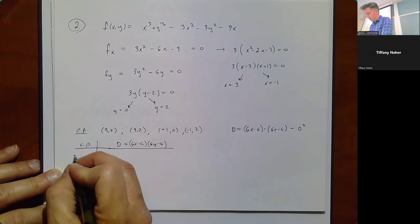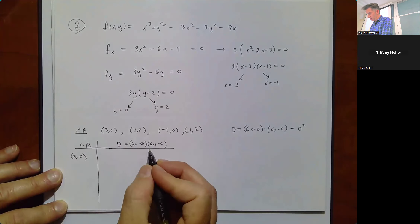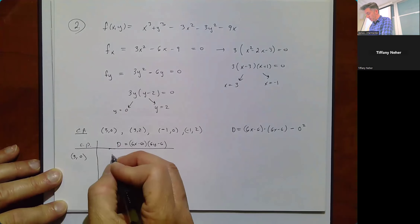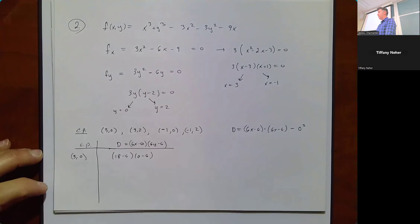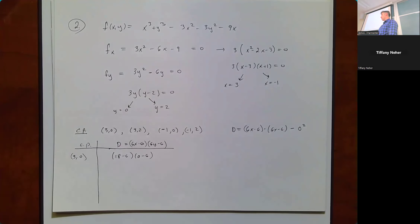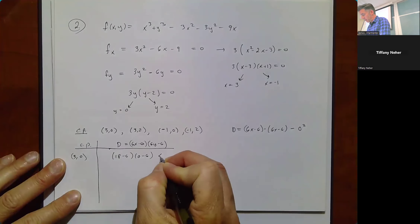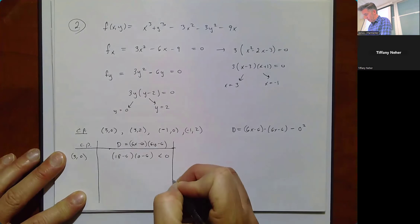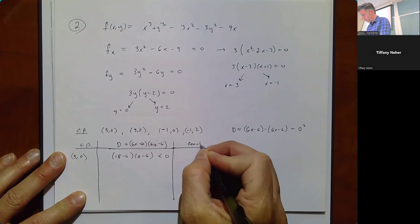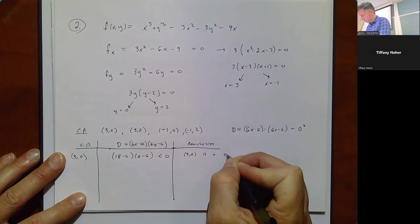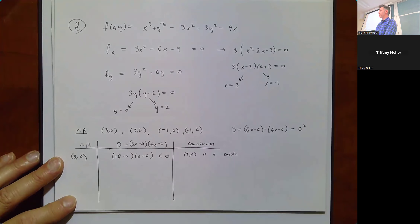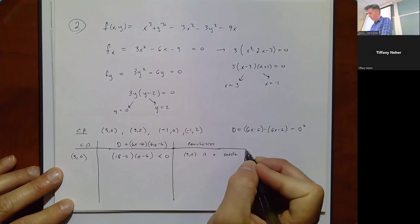At (3, 0): D = (18 - 6)(0 - 6) = (12)(-6), which is negative. A negative D means a saddle point. So (3, 0) is a saddle point.